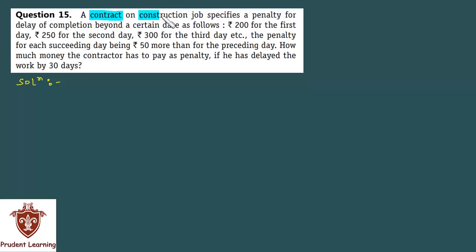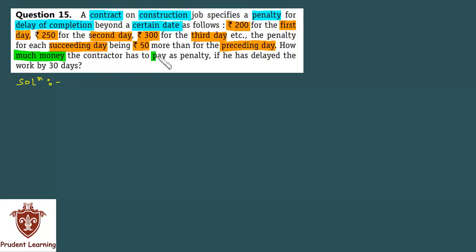A contract on a construction job specifies a penalty for delay of completion beyond a certain date as follows: 200 rupees for the first day, 250 rupees for the second day, 300 rupees for the third day, and so on — the penalty for each succeeding day being 50 rupees more than the preceding day. We have to calculate how much money the contractor has to pay as penalty if he has delayed the work by 30 days. Let me explain the full question before solving it.